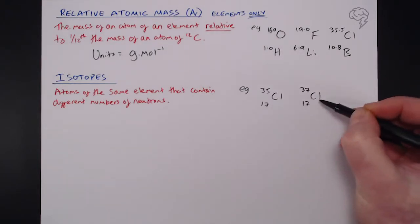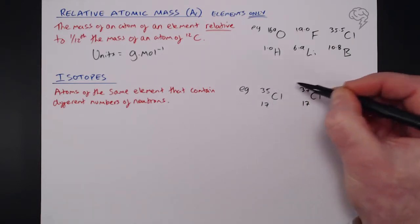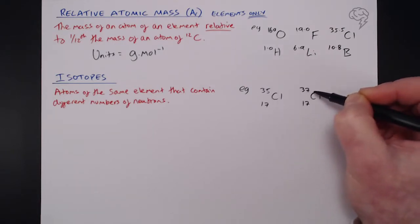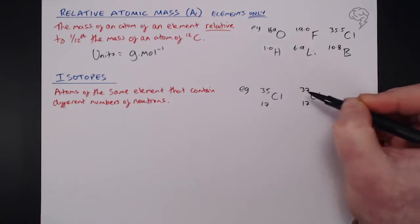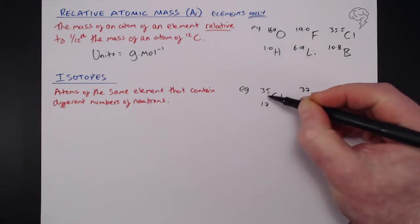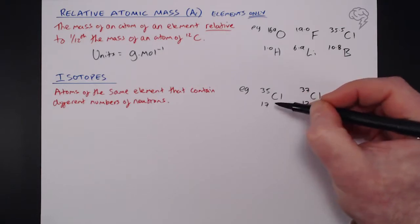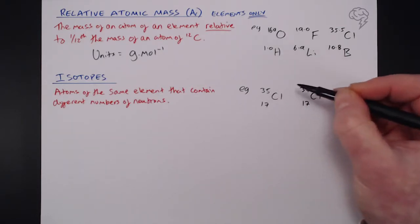Now, again, you'll notice same element, same number of protons here. We've got the proton number, but of course, this mass number is different. This isn't the relative atomic mass of chlorine, because like I said, that takes into account the average of these two isotopes. Chlorine-35 has a mass number of, of course, 35, with 17 protons and the rest being neutrons.